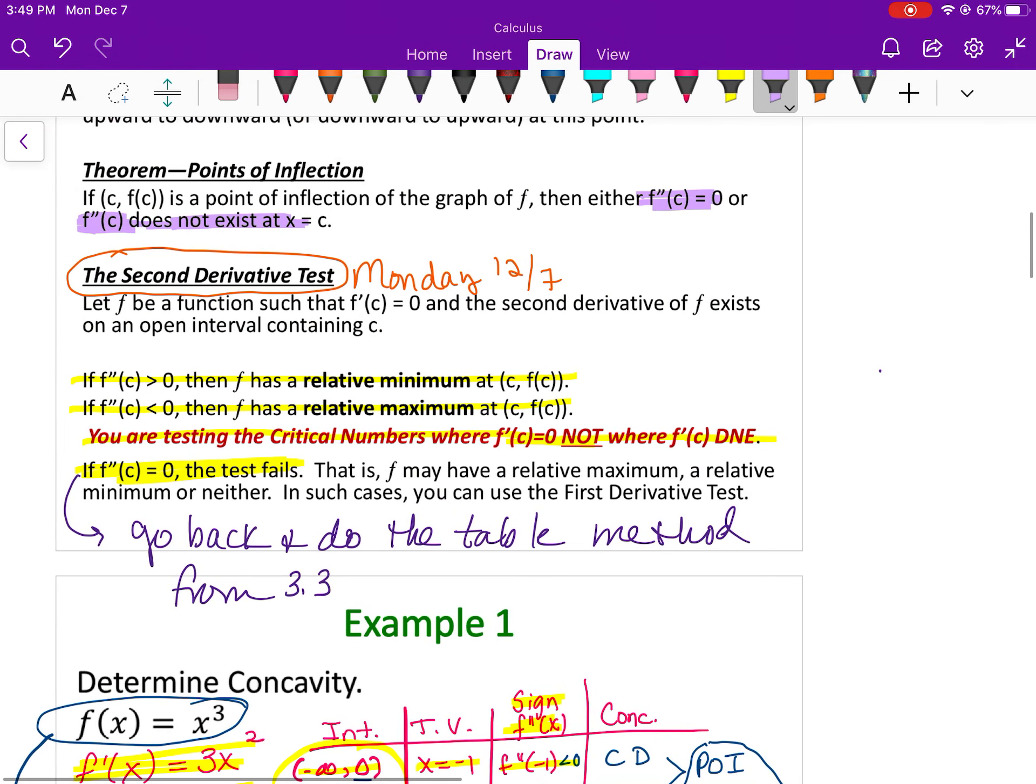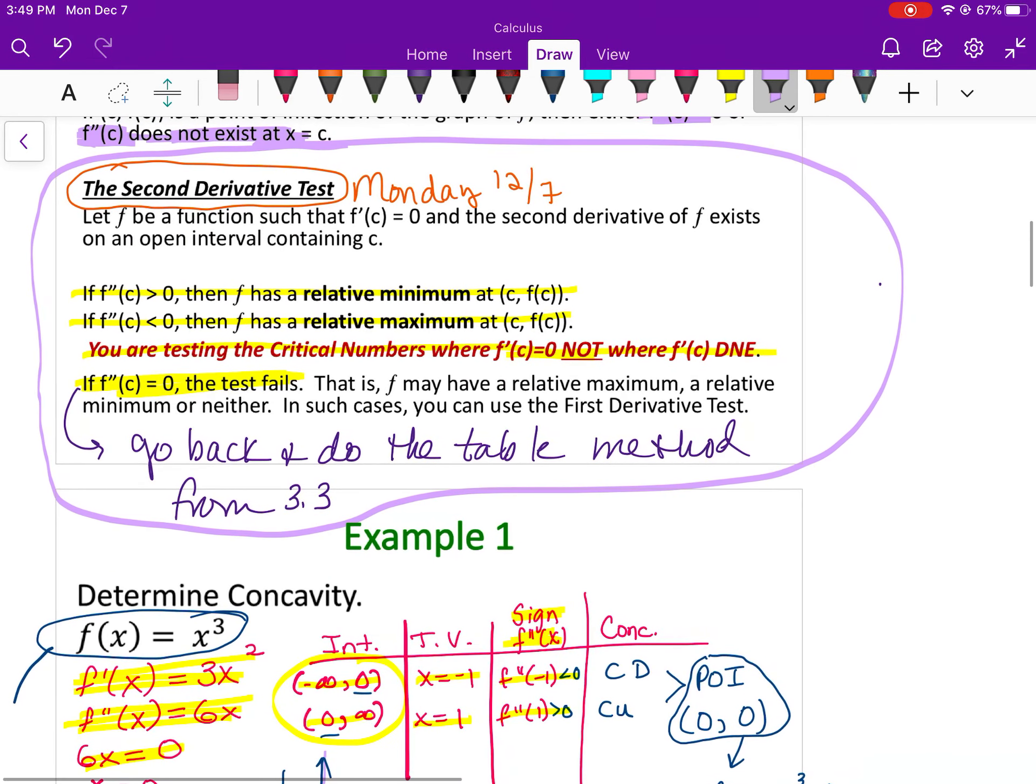This is what we focused on Monday. Basically, you're taking your critical numbers from your first derivative, where your first derivative equals zero, and plugging them into the second derivative. If it's positive there, then you have a relative minimum at C, and if it's negative, then you have a relative max.